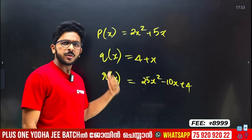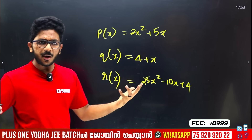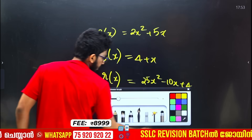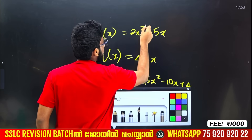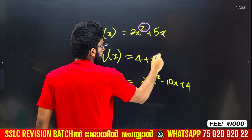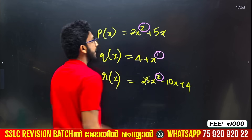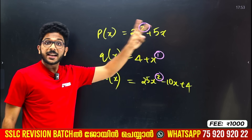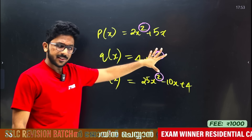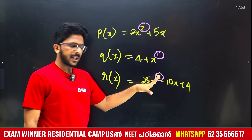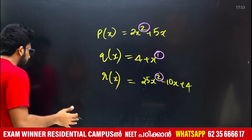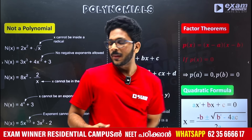A polynomial can be a single term or multiple terms. The power of x determines the degree — here is 1, here is 2. This is the second degree polynomial. First degree, second degree.